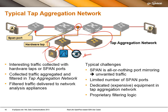We usually experience a few challenges with tap aggregation networks. Starting with the collection of traffic at the original switches — span operation is usually an all-or-nothing: you can mirror an input port or a number of input ports to a span port, but it's pretty hard to mirror only TCP port 80 traffic to a span port. Tap aggregation networks are usually pretty expensive because you buy them from specialized vendors who have their own control systems and proprietary filtering logic.